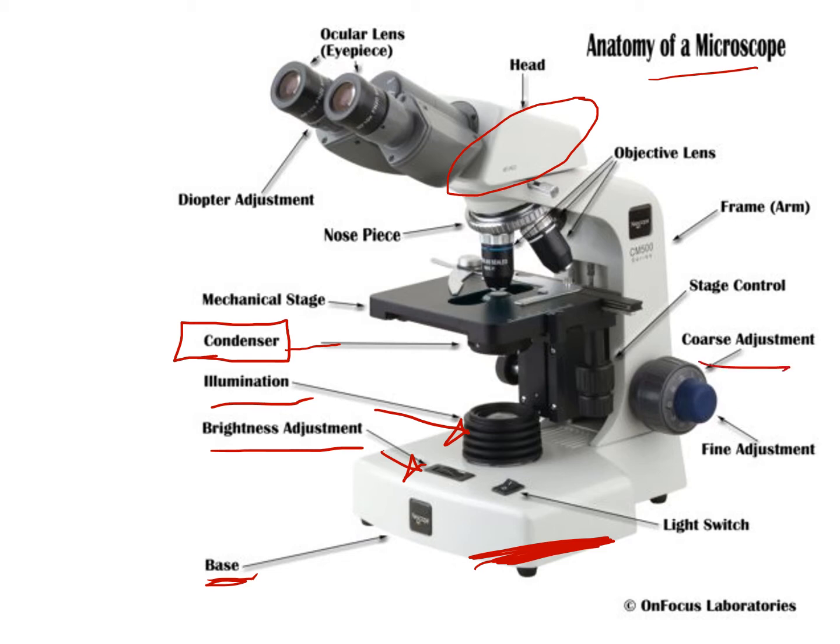Coarse and fine adjustment. That's for focus. And it moves the stage up and down. And so you can see right now the objective lens is really close to the stage. So if you use the coarse adjustment to move the stage up, you might smash it into the objective lens. That's bad. And lastly, here we have the ocular lens.